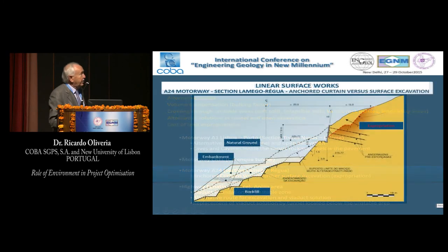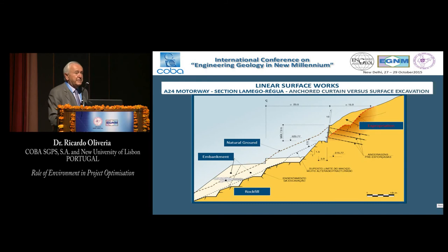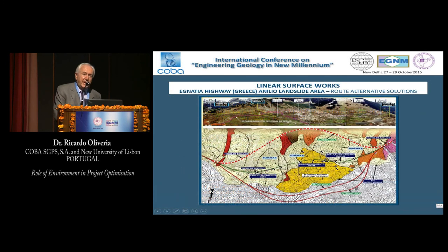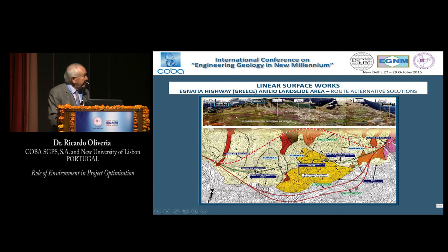I will also mention the use of anchoring and reinforced structures instead of excavation — very expensive but sometimes necessary due to material conditions and landscape requirements. For the Greek Egnatia highway, we studied a huge landslide where a tunnel had been built on both sides with a gap in the middle. We studied all the details and proposed constructing a tunnel through the landslide rather than a viaduct or open work, which was necessary to prevent the whole structure from coming down.